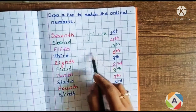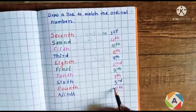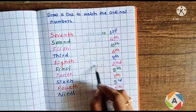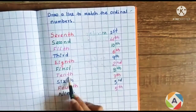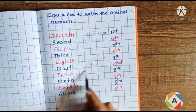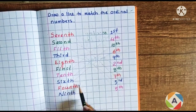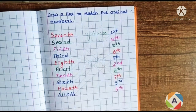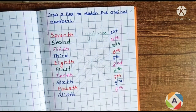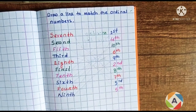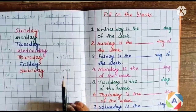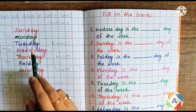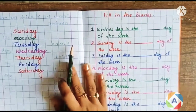Then 5th — match 5th with 5th. Okay, then third, here is third, eighth, first, tenth, sixth, fourth, then ninth. So children, this concept will become clear and children will enjoy doing this matching worksheet.